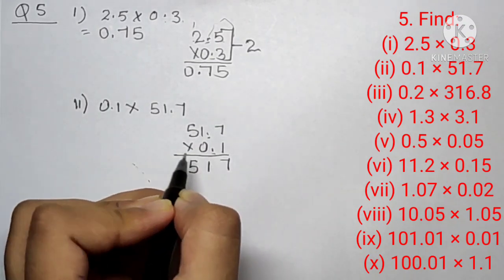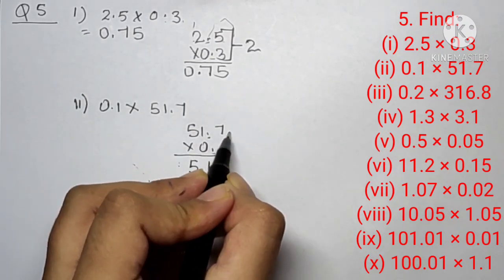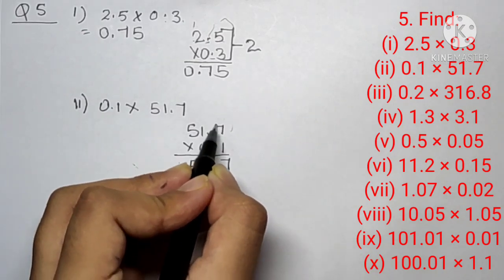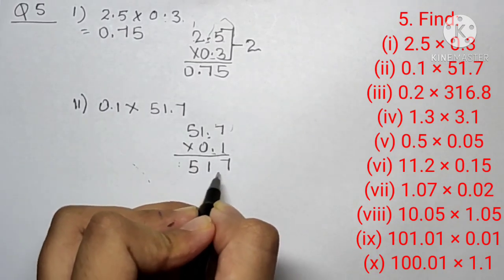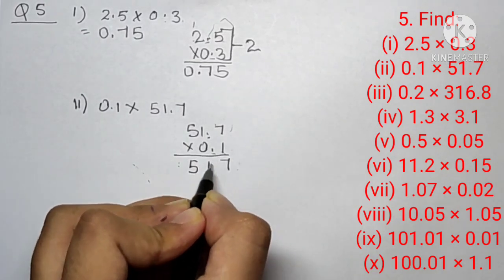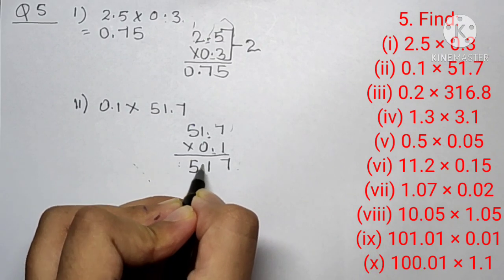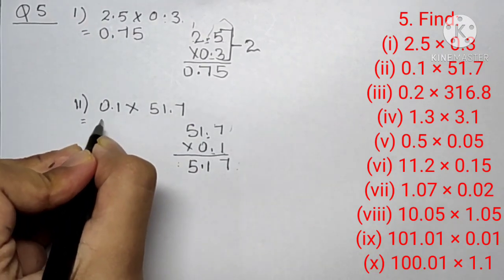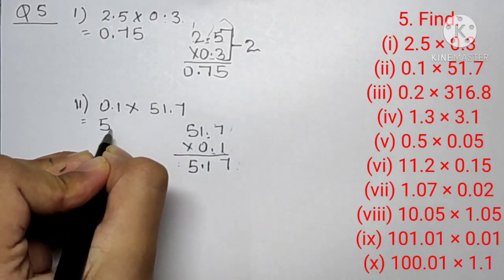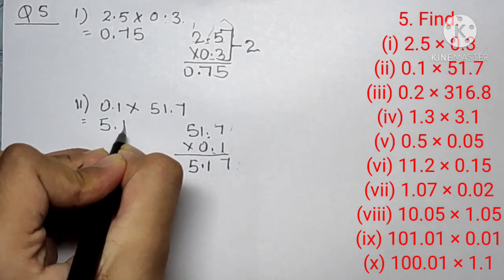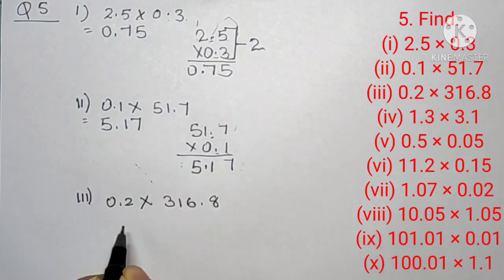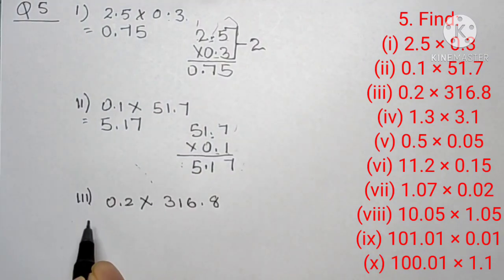Now for the decimal point: here is one decimal point, here is another decimal point, both are one digit from the last. So this means two digits from the last. Our answer is 5.17.